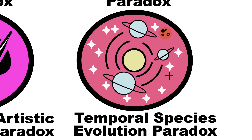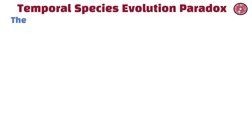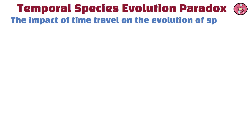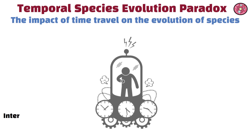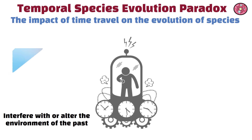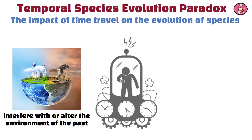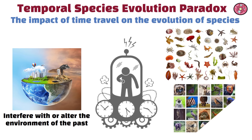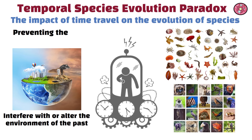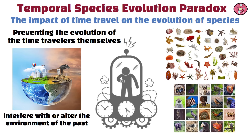The temporal species evolution paradox considers the impact of time travel on the evolution of species. If time travelers consistently interfere with or alter the environment of the past, it could significantly change the evolutionary pressures on species, potentially preventing the evolution of the time travelers themselves.